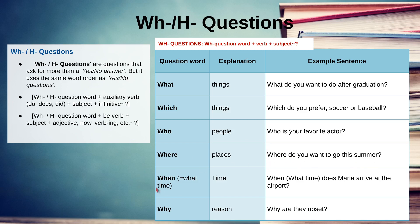We've got when, meaning 언제 — and we can also say what time, meaning 몇 시에. For example: When does Maria arrive at the airport? Maria는 언제 도착하니 공항에서? Finally, we've got why, meaning 왜. For example: Why are they upset? 그들은 왜 기분이 나빠?